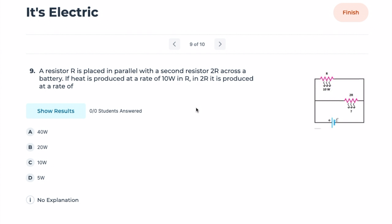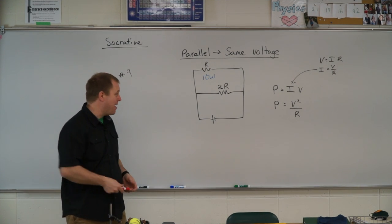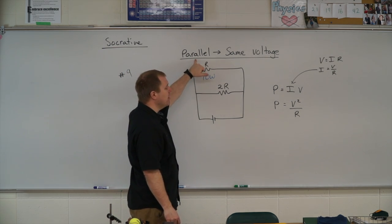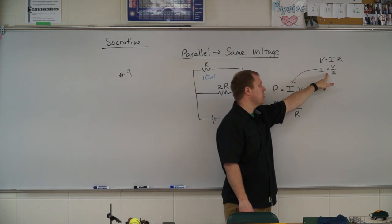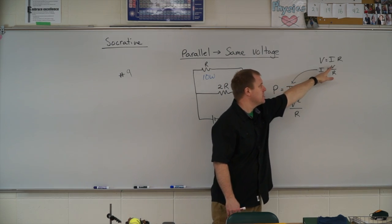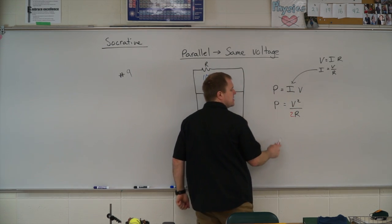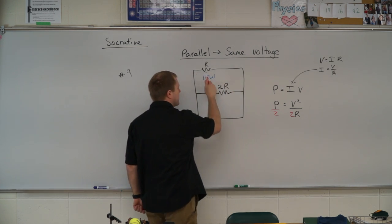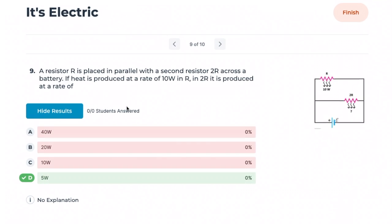Number nine: resistor R is placed in parallel with resistor 2R across a battery. Heat is produced at 10 watts in R — at what rate in 2R? In parallel, voltage is the same across both. Using P = V²/R, the resistor with twice the resistance has half the power. So if R dissipates 10 watts, 2R dissipates 5 watts.